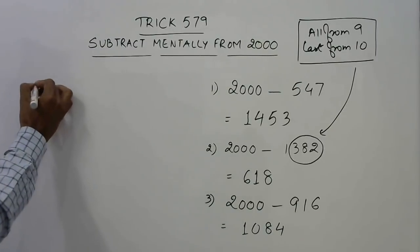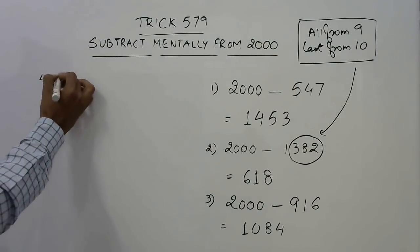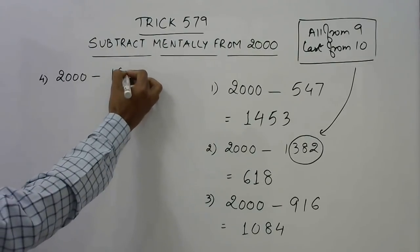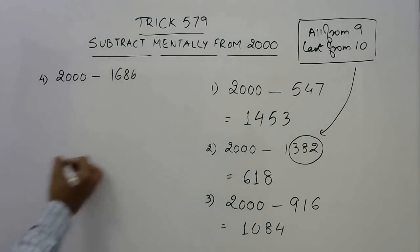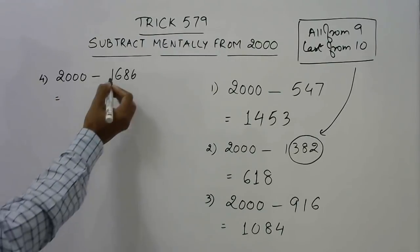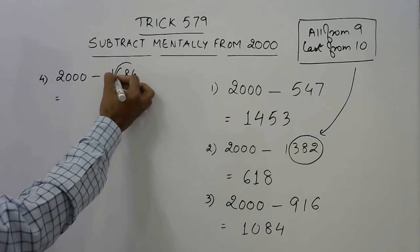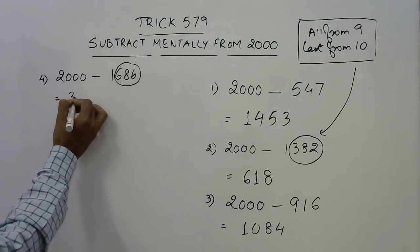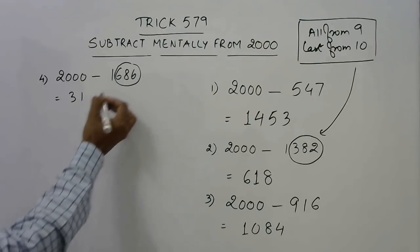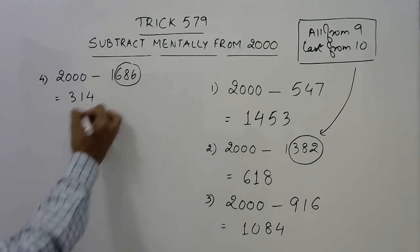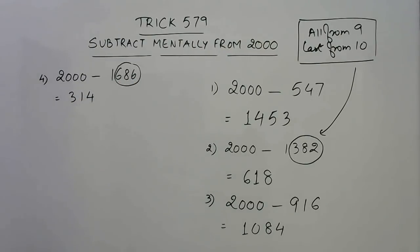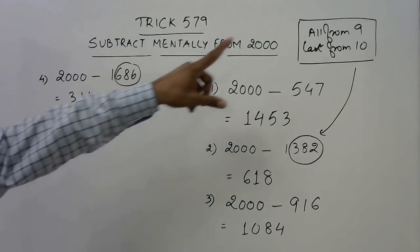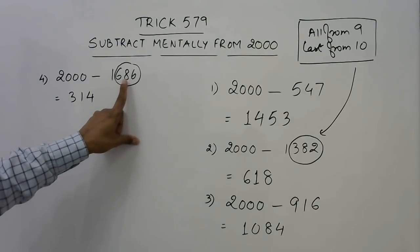Say we have 2000 minus 1686. Now leave the leading 1, and apply 'all from 9 and last from 10' to the last three digits. So 9 minus 6 is 3, 9 minus 8 is 1, and 10 minus 6 is 4. The answer is 314. We just forget the leading digit and apply the rule to the remaining three digits.